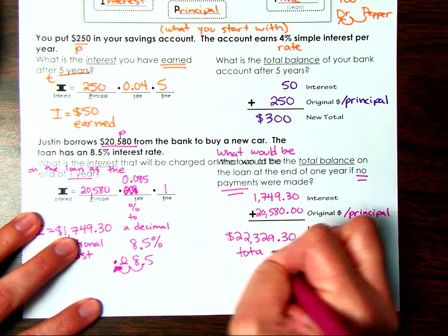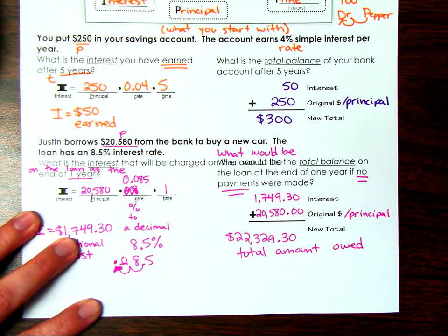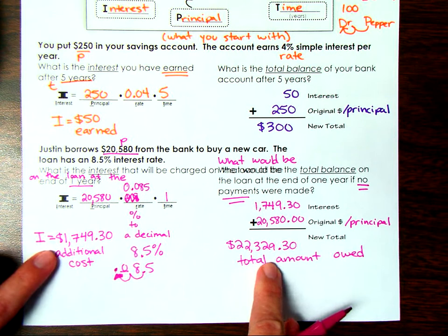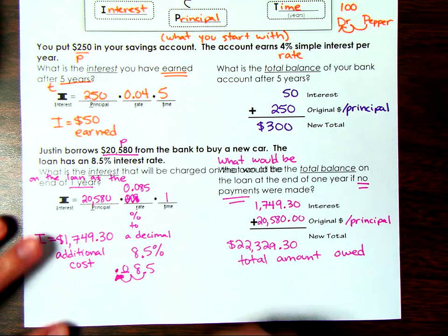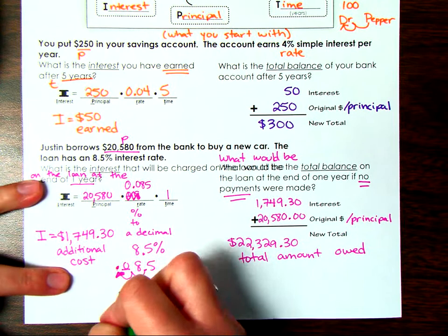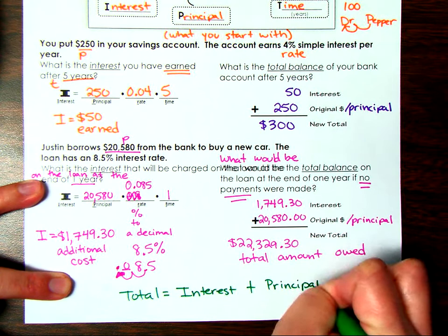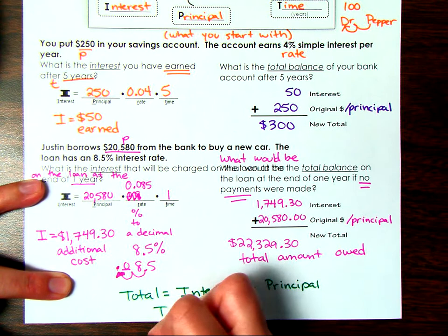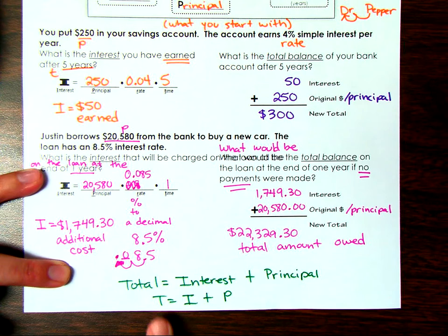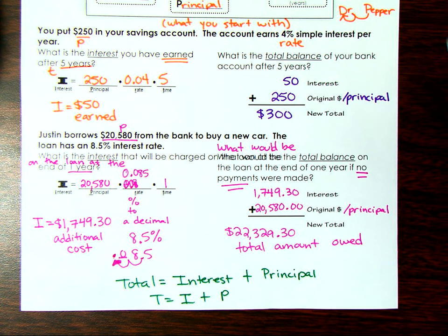When you're borrowing money, interest is an additional cost. When you're investing money, it's extra money you earn. Whenever you want to find the total, you take your interest and add your principal — you can remember this with the letters T-I-P: Total equals Interest plus Principal. That's exactly what we did in both examples. Thanks for tuning in — reach out to your teacher if you need any help. Good luck!